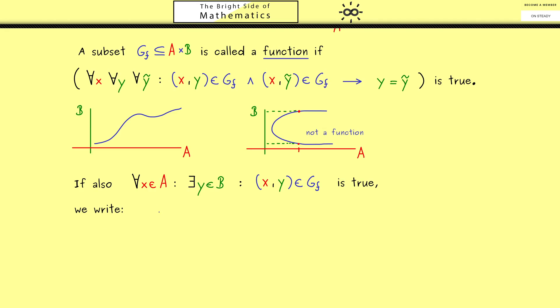Then we can truly write f: A → B with a new arrow between the sets, and also f(x) = y. So this is a new notation we use when (x, y) as a pair is in the subset.